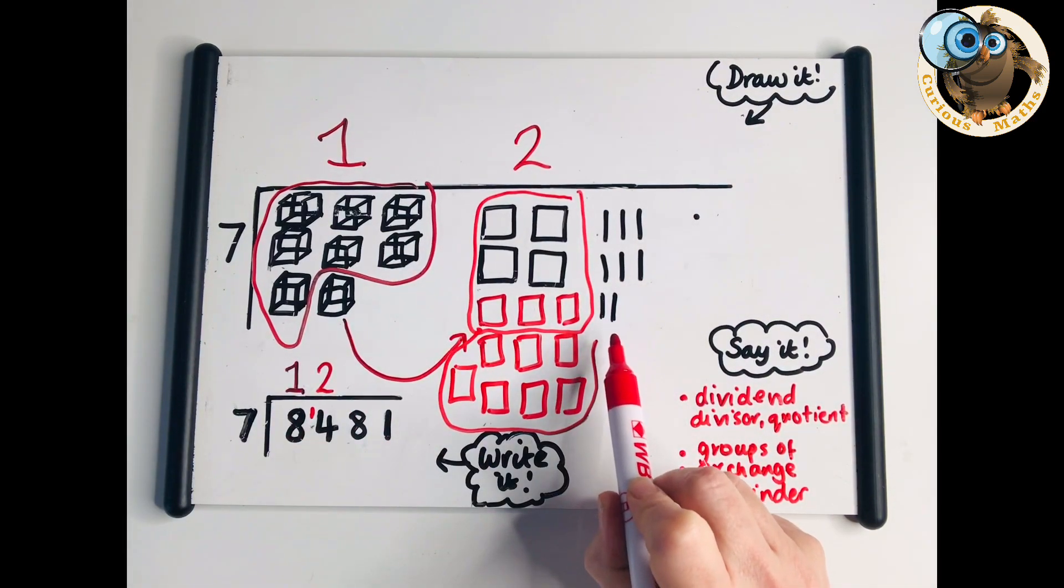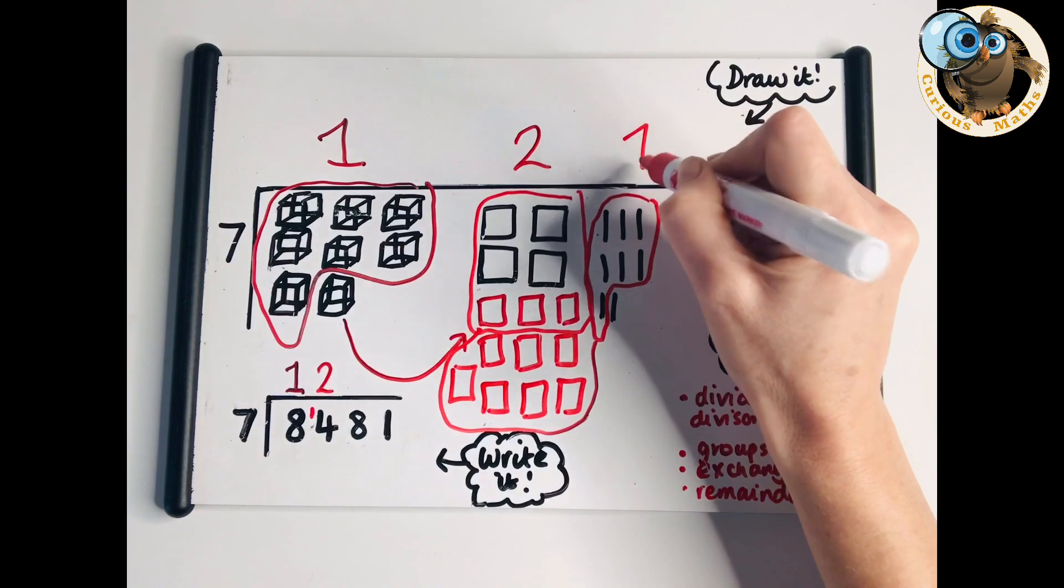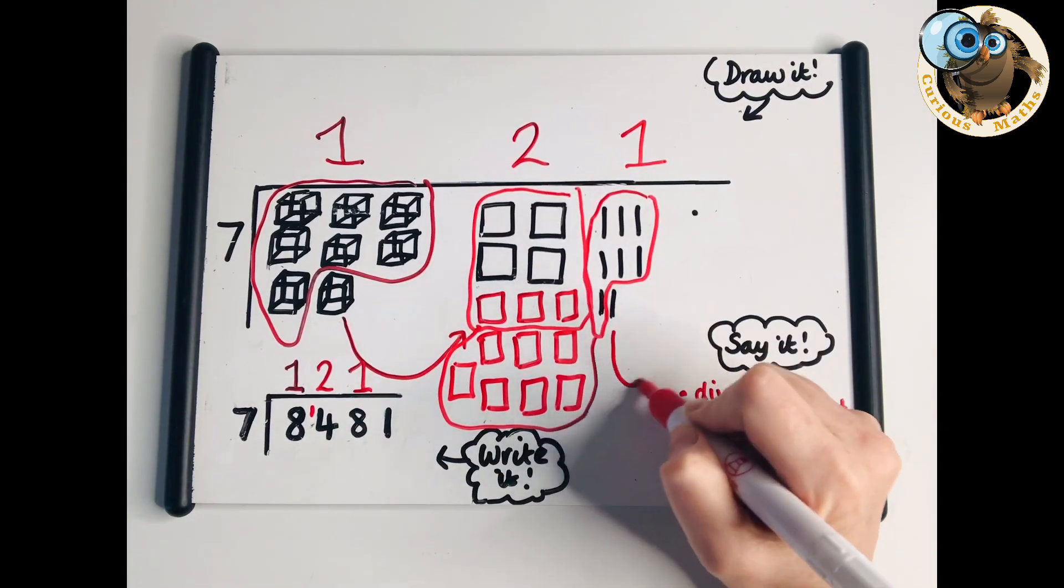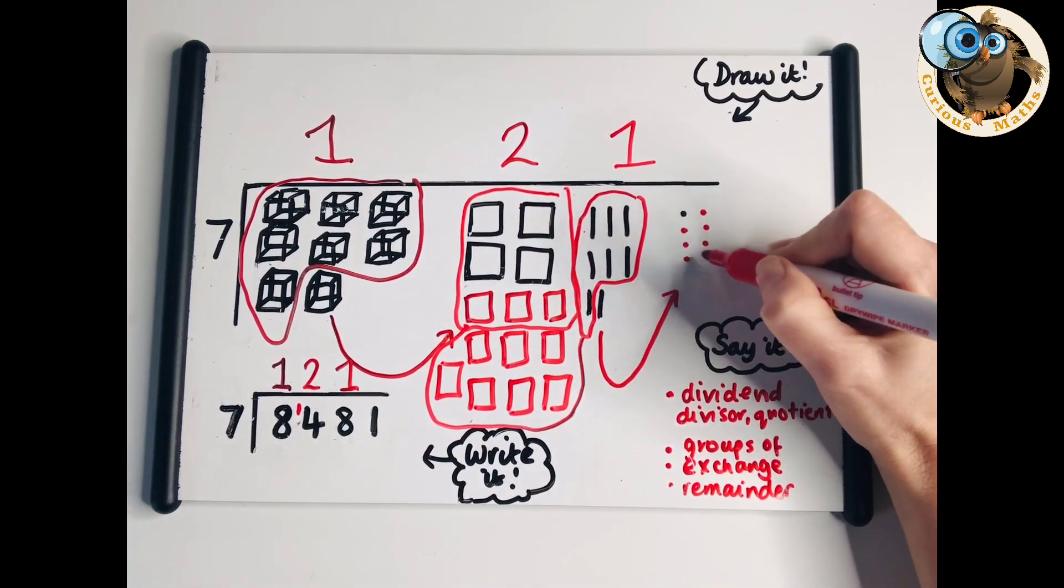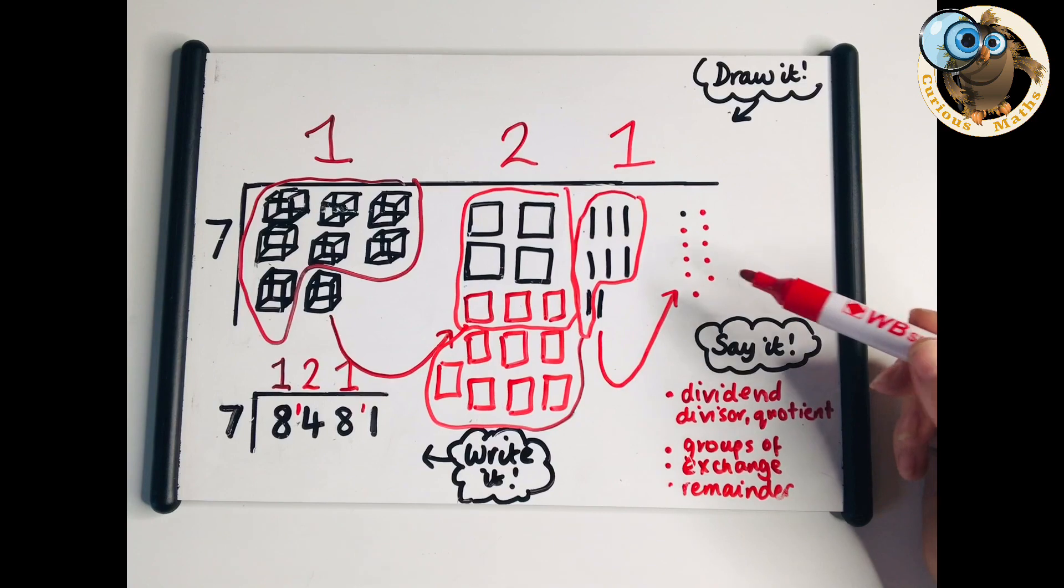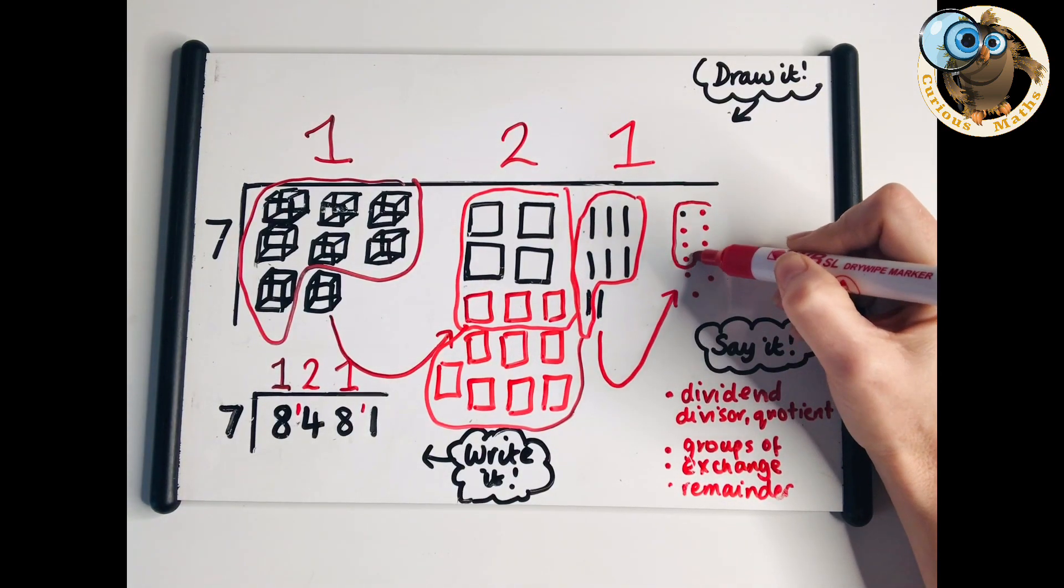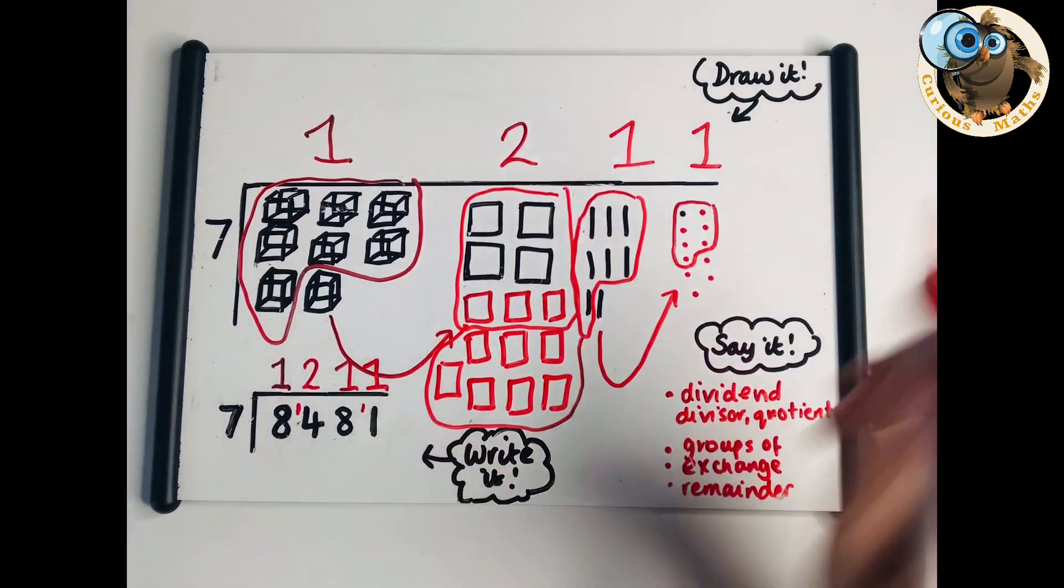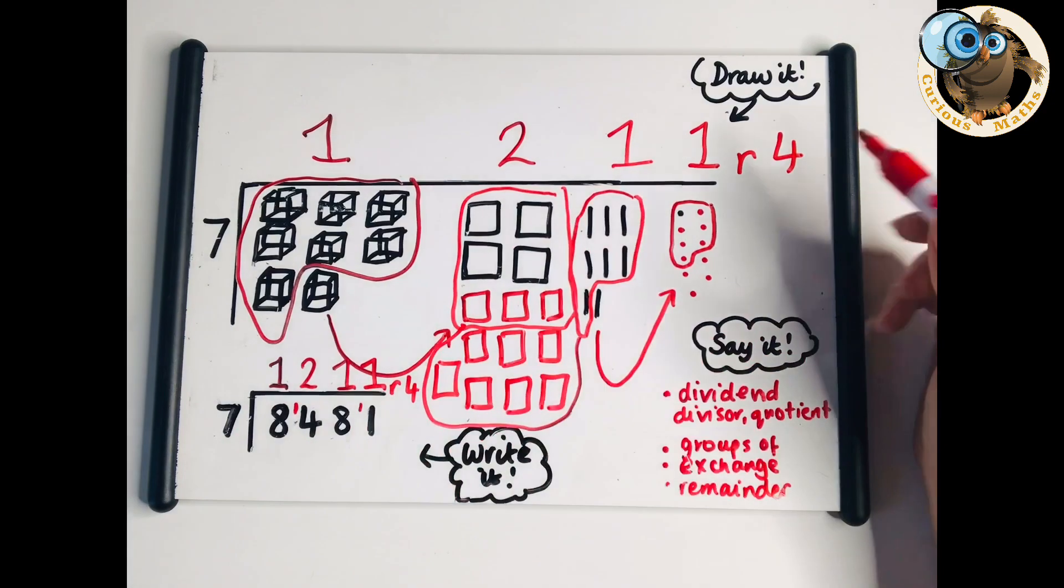Next the tens column. I've got eight tens to put into a group of seven. I have one group of seven and one ten remaining, so I exchange that into the ones column. I show that in my compact form. Now I have eleven ones to put into a group of seven. I have one group of seven and four remaining.